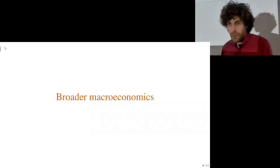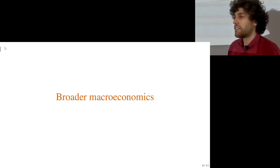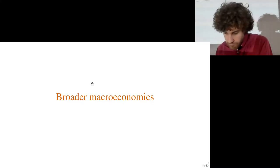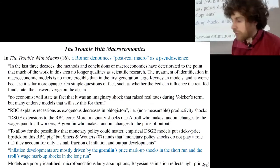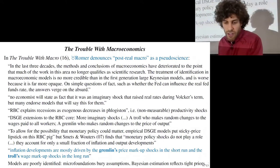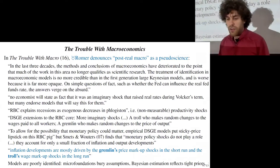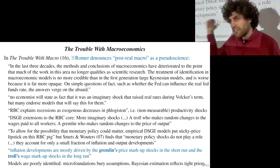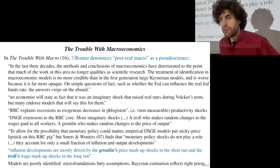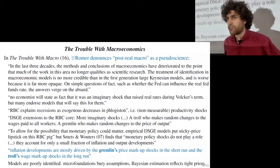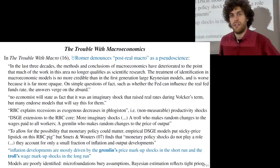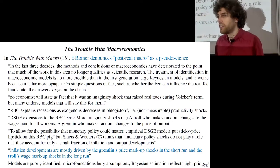Today we'll finish the classes on macro and start the foundation of economics. Paul Romer is a Nobel Prize winner, and in 2016 he wrote a paper called 'The Trouble with Macroeconomics' where he harshly criticizes the development of macroeconomics in the last 40 years.